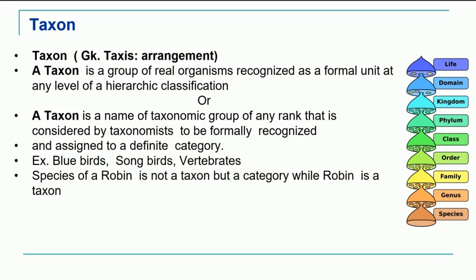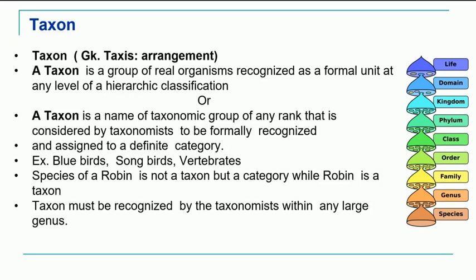A taxon always refers to concrete biological objects. Thus, the species of robin is not a taxon but it is a category, whereas robin itself is a taxon. A taxon must be recognized by the taxonomist within any larger genus — first within that particular genus you should identify a particular taxon.